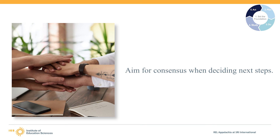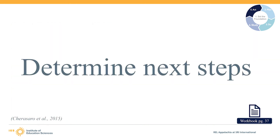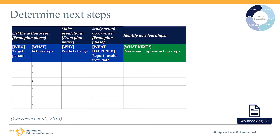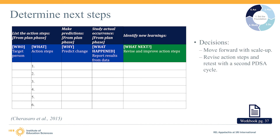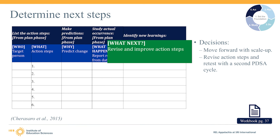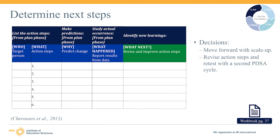Allocate sufficient time to thoroughly discuss any conflicting ideas and aim for team consensus about next steps. Reaching consensus helps team members support the final decision. Based on what you learned from the implementation and outcome data, your improvement team may decide to move forward and scale up your evidence-based practice to reach a larger number of students. Or your team might decide to revise the action steps and conduct a second PDSA cycle to test the practice again. Making small adjustments to your plan and retesting can be more efficient than starting over with a new evidence-based practice.